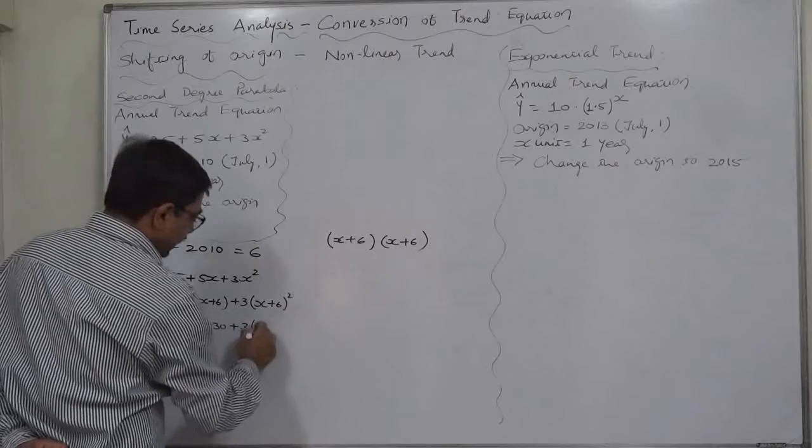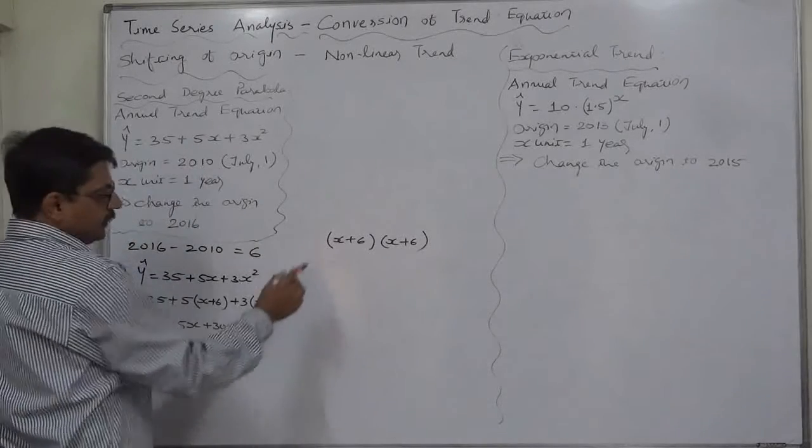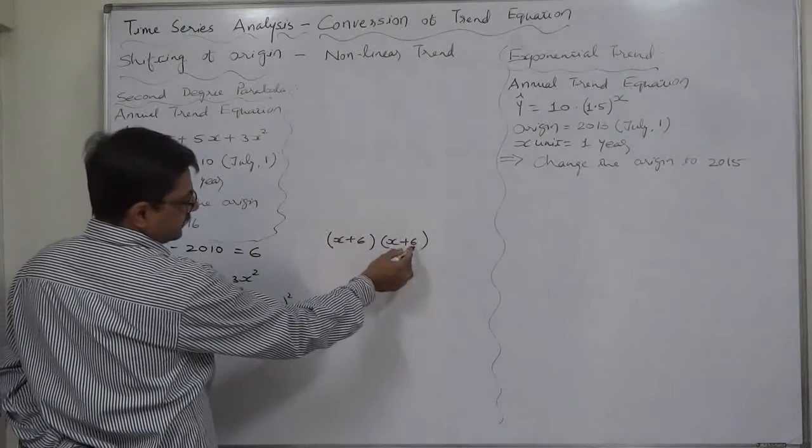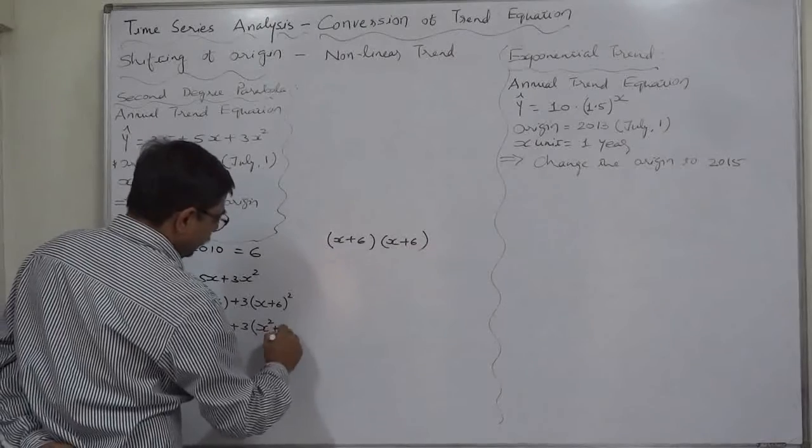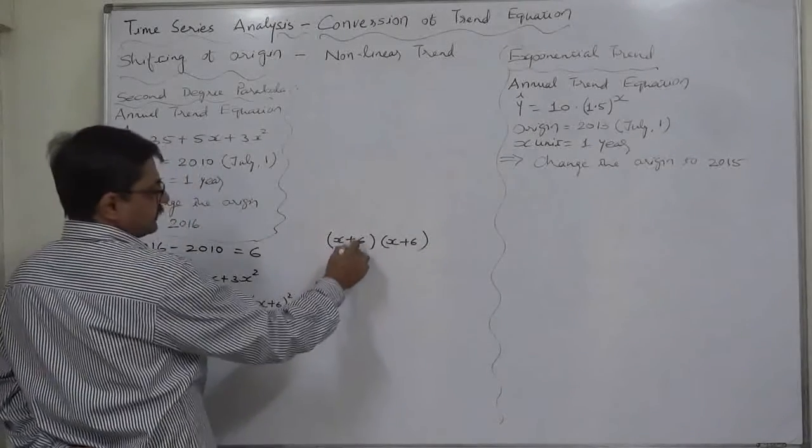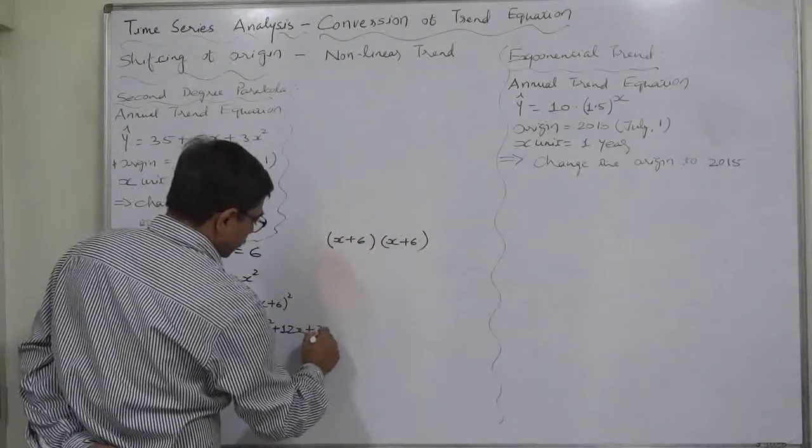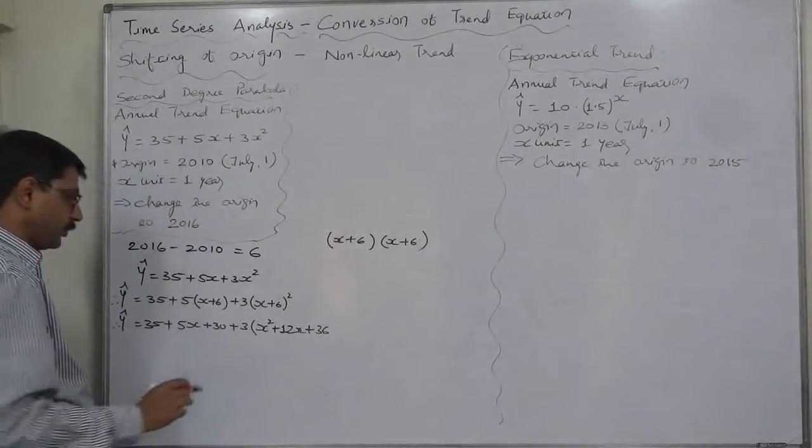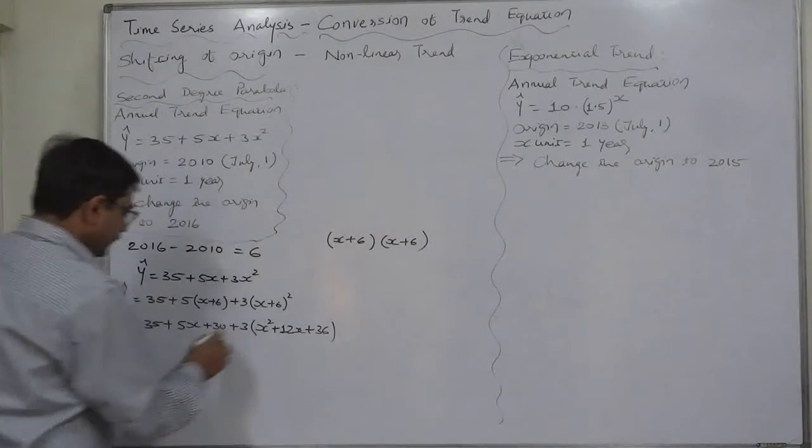x plus 6 into x is 6x plus 6 into x is 6x, so plus 12x. 6 into 6 is 36 positive. Let's open this bracket.